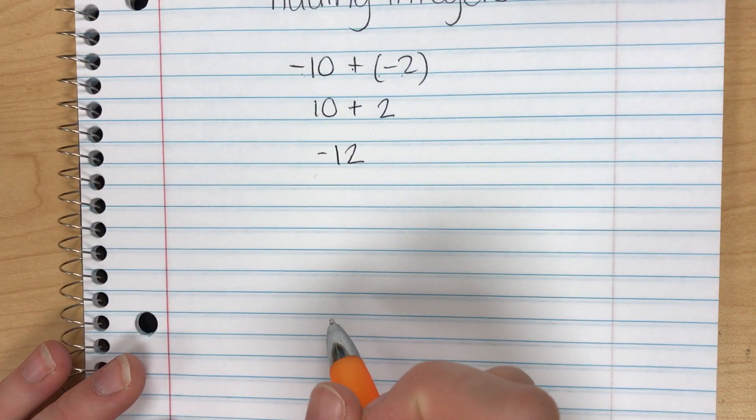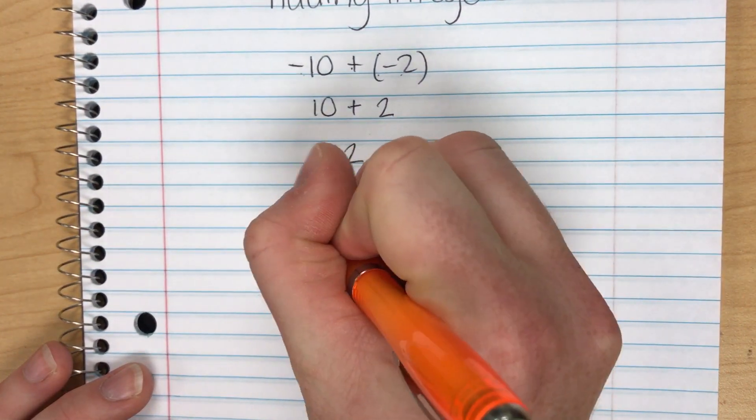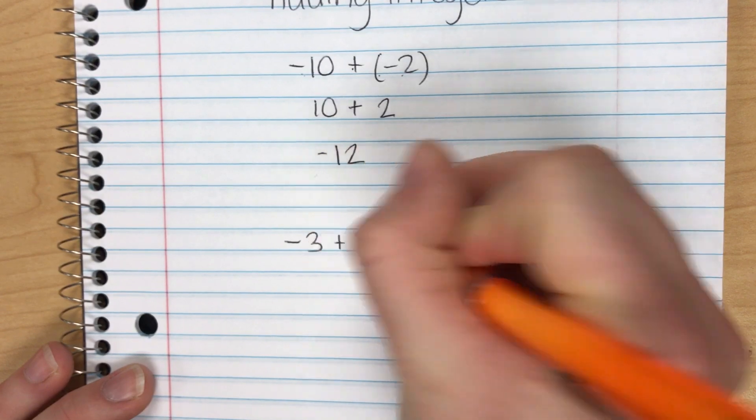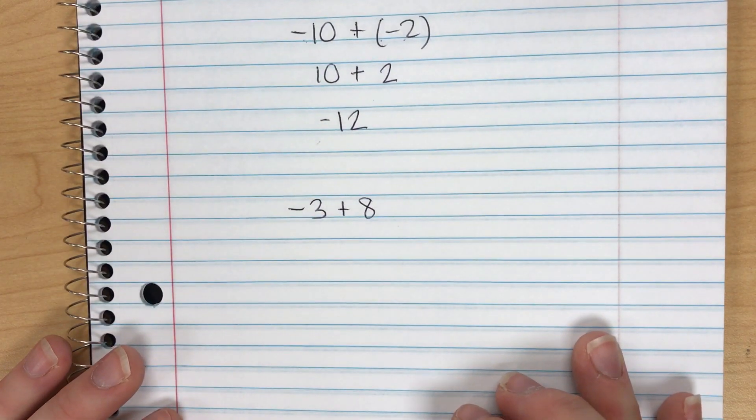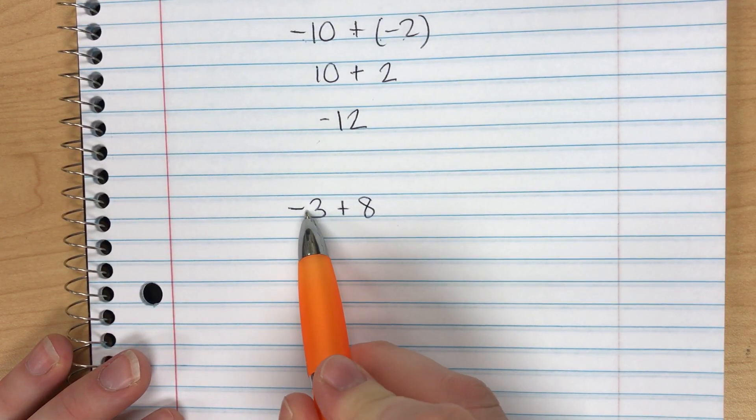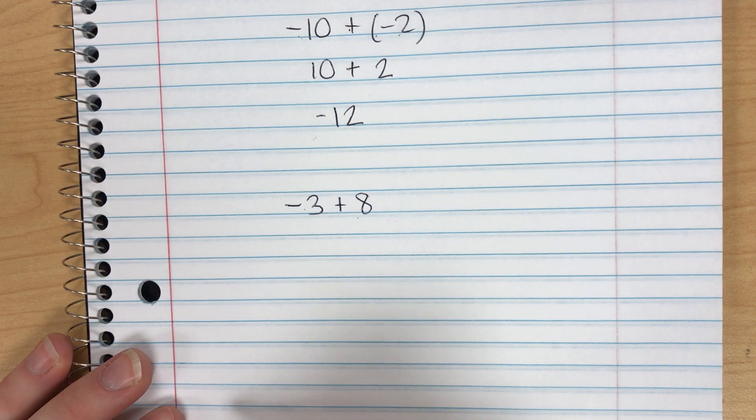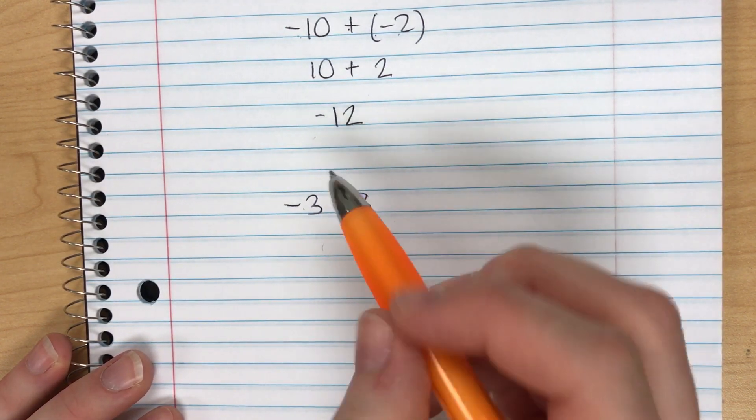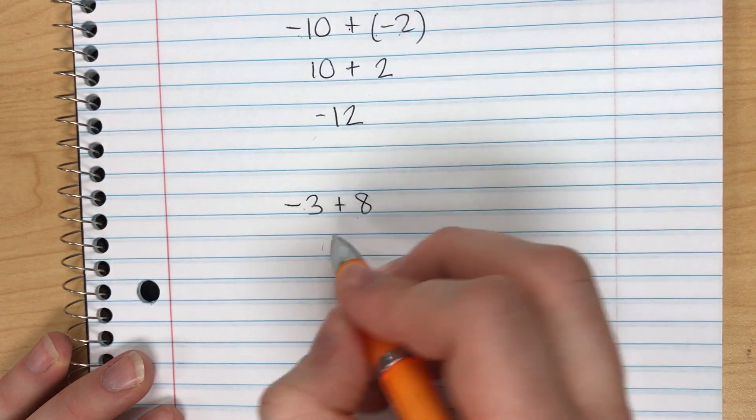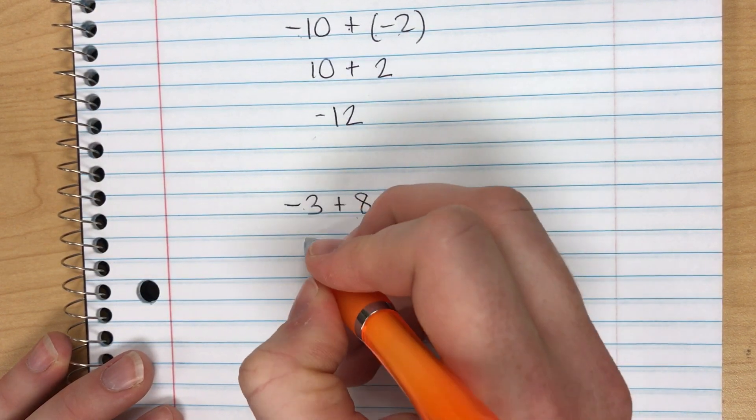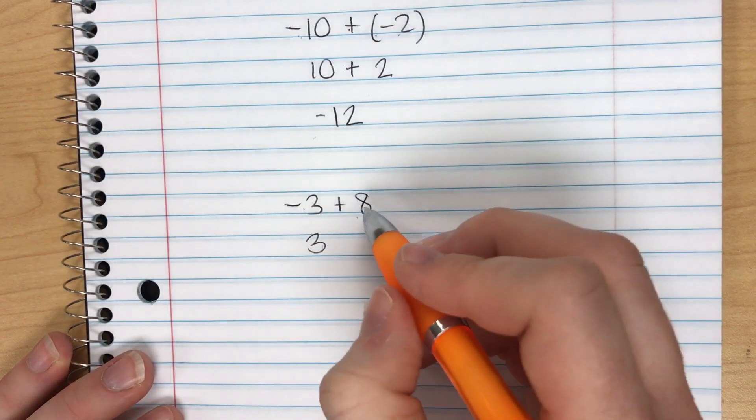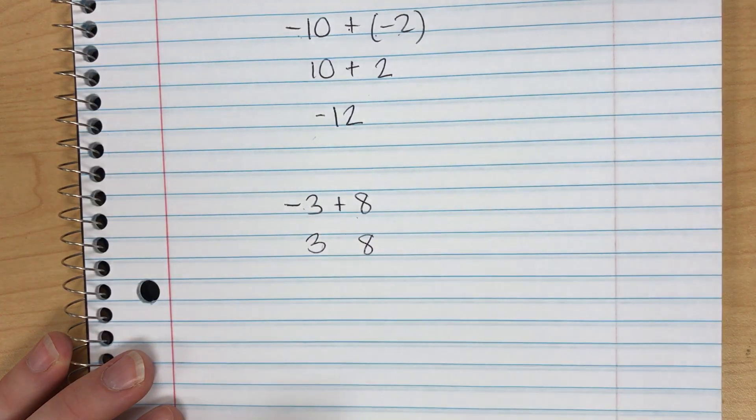What about different signs? Let's say I have negative 3 plus 8. My signs are different. I have a negative and I have a positive. First step is the same as before. I'm going to find the absolute values. Negative 3's absolute value is 3 and 8's absolute value is 8.